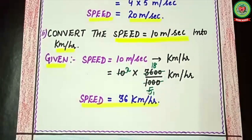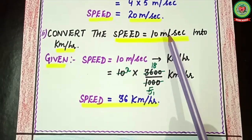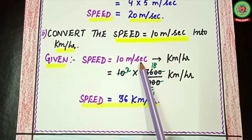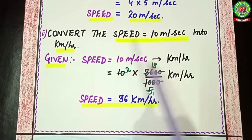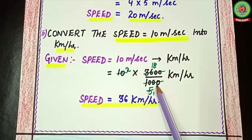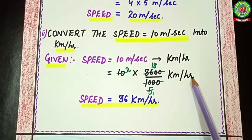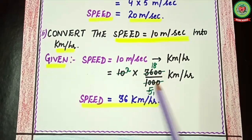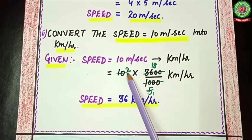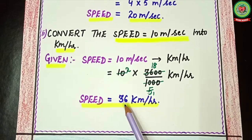Next example: convert speed = 10 meter per second into kilometer per hour. Given: speed = 10 m/s. Multiply by 3600 upon 1000: 10 × (3600/1000). Cut the last two zeros, simplify on two-table: 36 over 2 = 18, 10 over 2 = 5, giving 18 over 5. Then 10 divided by 5 = 2, and 2 × 18 = 36. So speed equals 36 km/h.